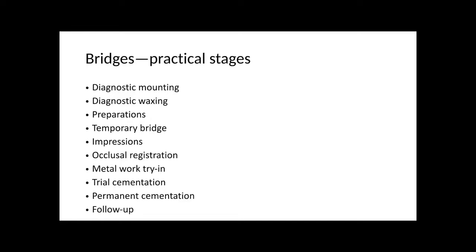Construct the temporary bridge using the matrix from the diagnostic waxing, filled with a proprietary temporary crown-bridge resin such as Protemp, seated over the preparation. Once set, remove, trim, polish, and cement with a temporary cement such as Temp-Bond. Impressions are taken using elastomeric material; ideally all preparations are captured in one impression. If difficulties arise, a transfer coping technique can be used where clear acrylic copings are made on the dies of the preparation.